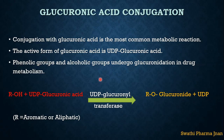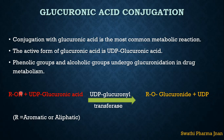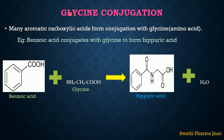The drugs which contain phenolic groups and alcoholic groups will undergo glucuronidation conjugation reaction in drug metabolism. Aliphatic or aromatic compounds containing an OH group — either a phenolic group or an alcoholic group — when reacted with UDP-glucuronic acid in the presence of UDP-glucuronosyltransferase, will convert into RO-glucuronide. UDP will be removed and in the place of hydrogen, glucuronide will be attached.